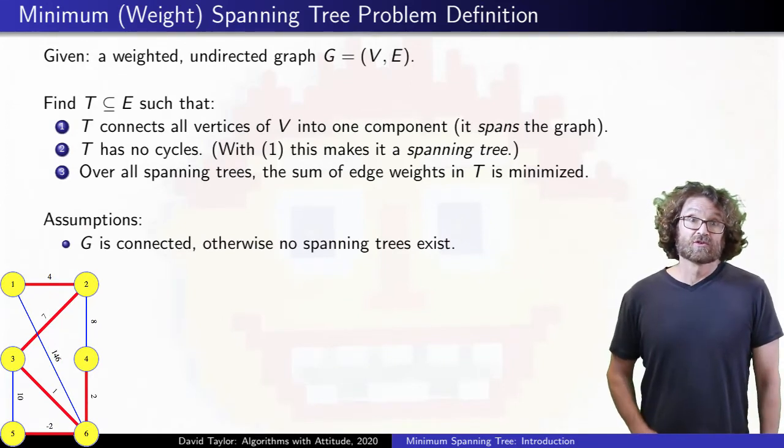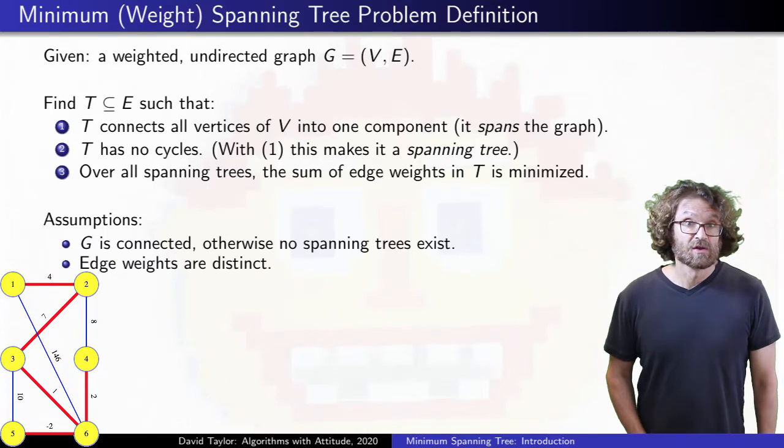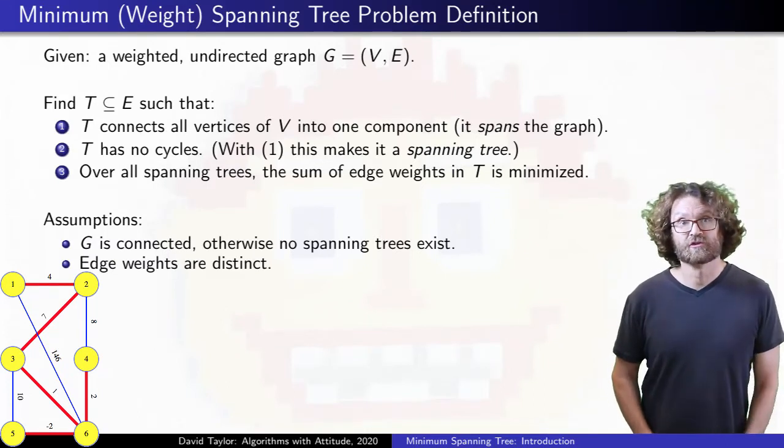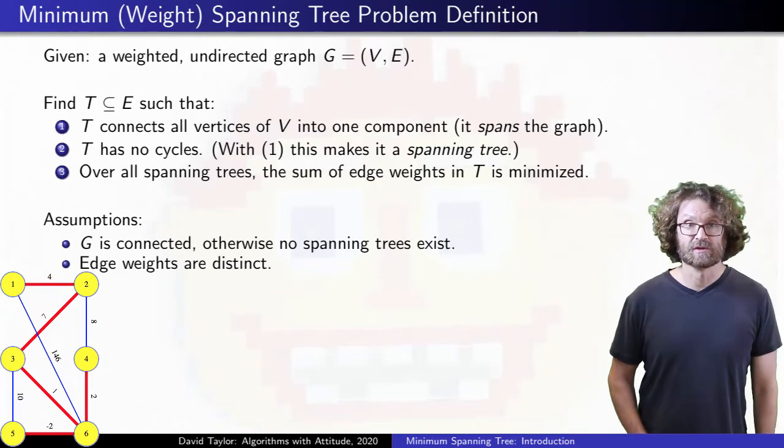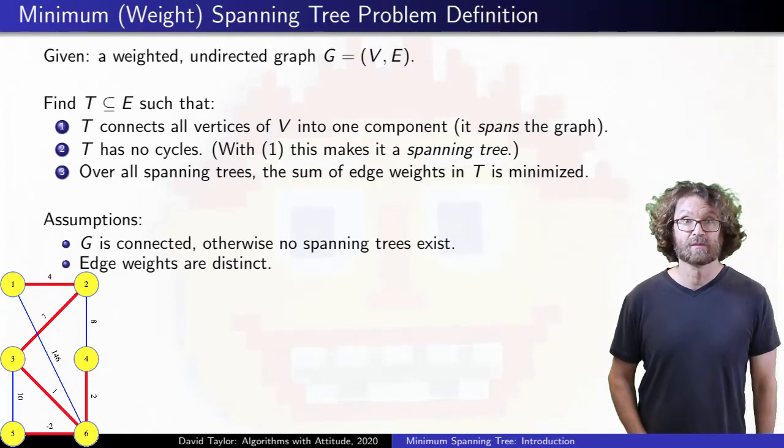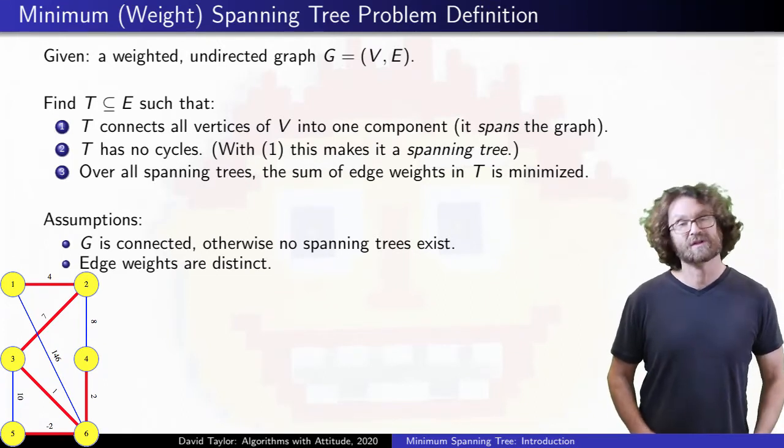We also assume that edge weights are distinct, which we will prove forces the tree to have a unique minimum spanning tree. Without that assumption, the algorithms I cover still find minimum spanning trees, but the proofs are a little more complex.